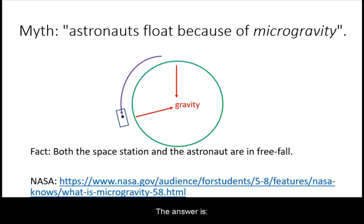The answer is that both the space station and the astronaut inside are being pulled by gravity and are in free fall. Because they are in free fall at the same rate, they don't move relative to each other and hence the appearance of floating.